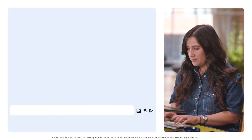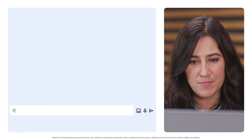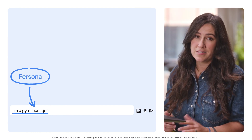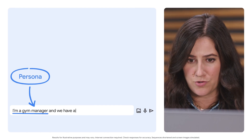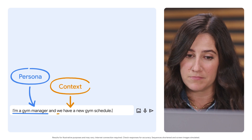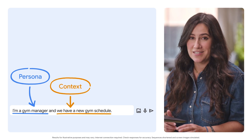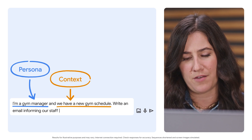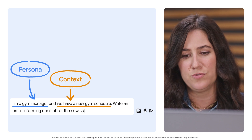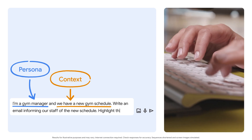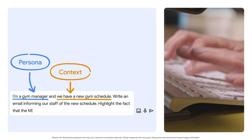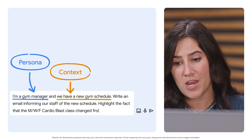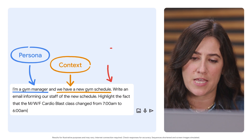Let's start with the persona: I'm a gym manager. Next, we'll add in the context: we have a new gym schedule. Then specify the task: write an email informing our staff of the new schedule, and highlight the fact that the Monday, Wednesday, Friday Cardioblast class changed from 7 a.m. to 6 a.m.